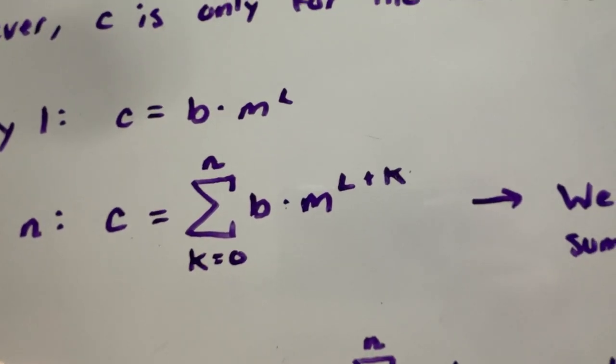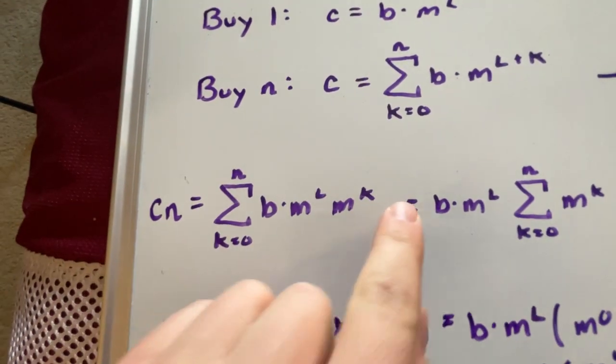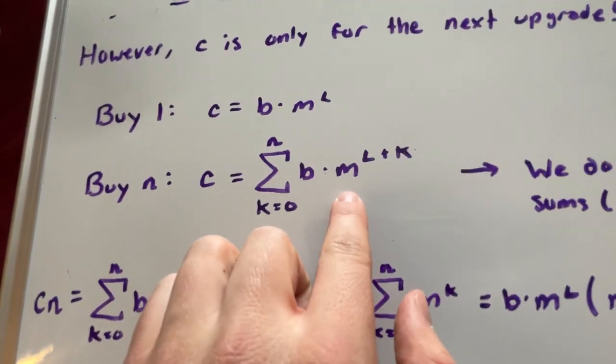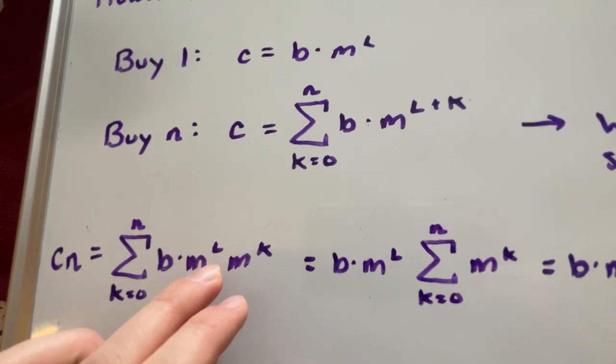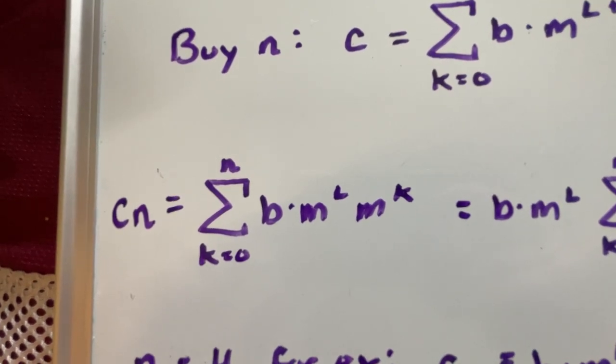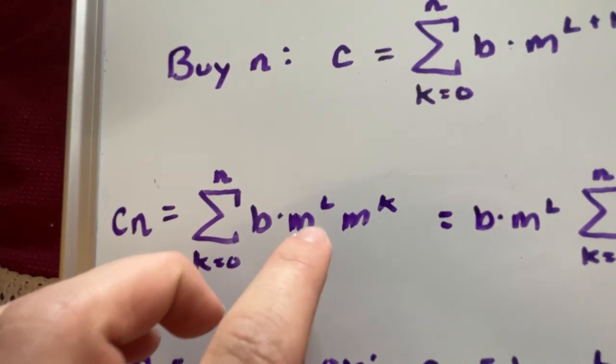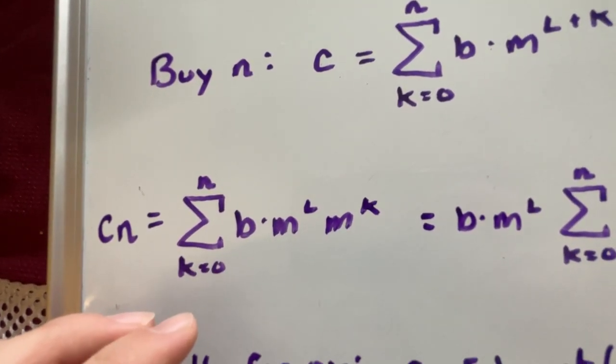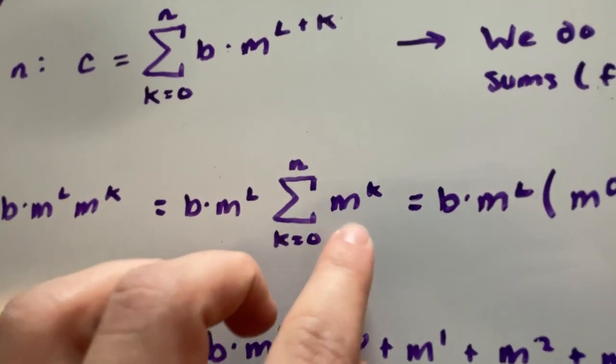Let's expand this sum. All I did was just pull out the k from l plus k exponent, so m to the power of l plus k equals m to the power of l times m to the power of k. Since there's no k inside b or m to the l, we can take this out of the sum. We're basically just multiplying this by the sum of m to the power of k.